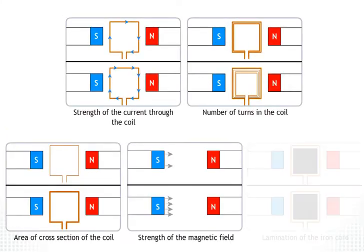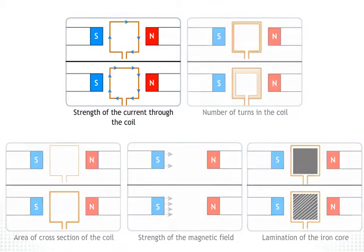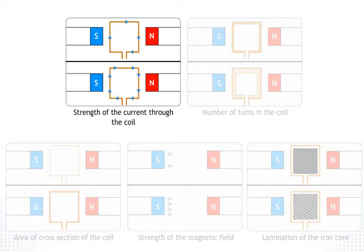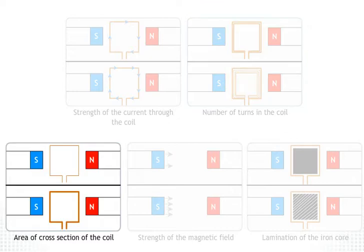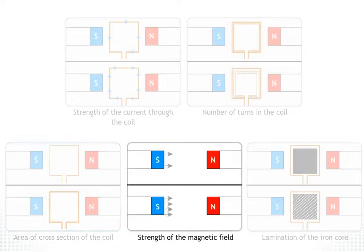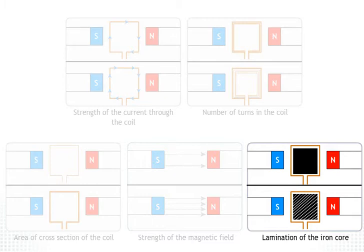The power of an electric motor depends on the strength of the current through the coil, the number of turns in the coil, the area of cross-section of the coil, the strength of the magnetic field, and the lamination of the iron core, which reduces energy losses.